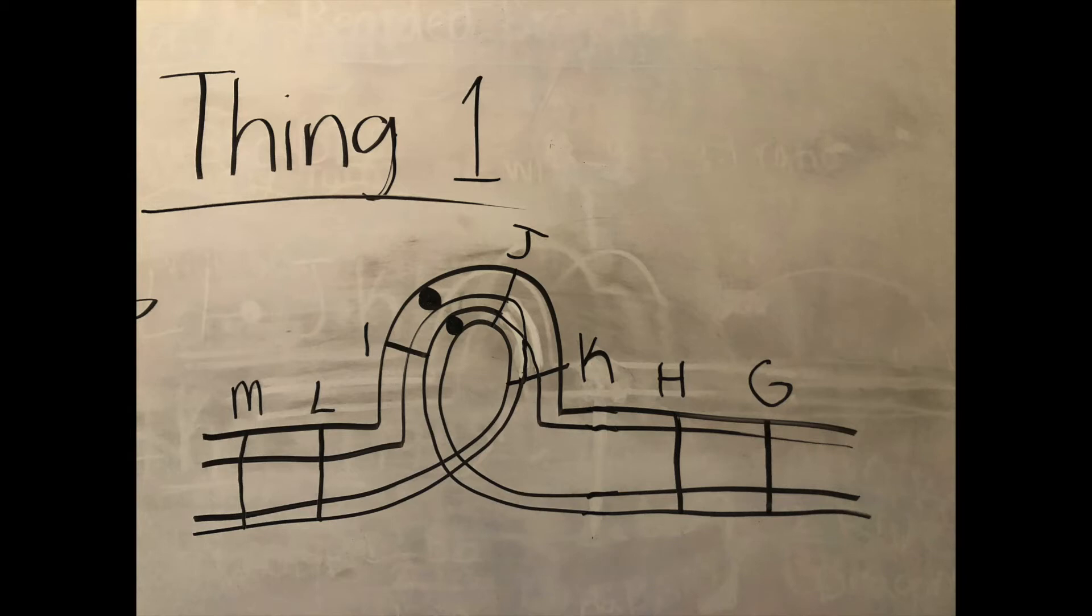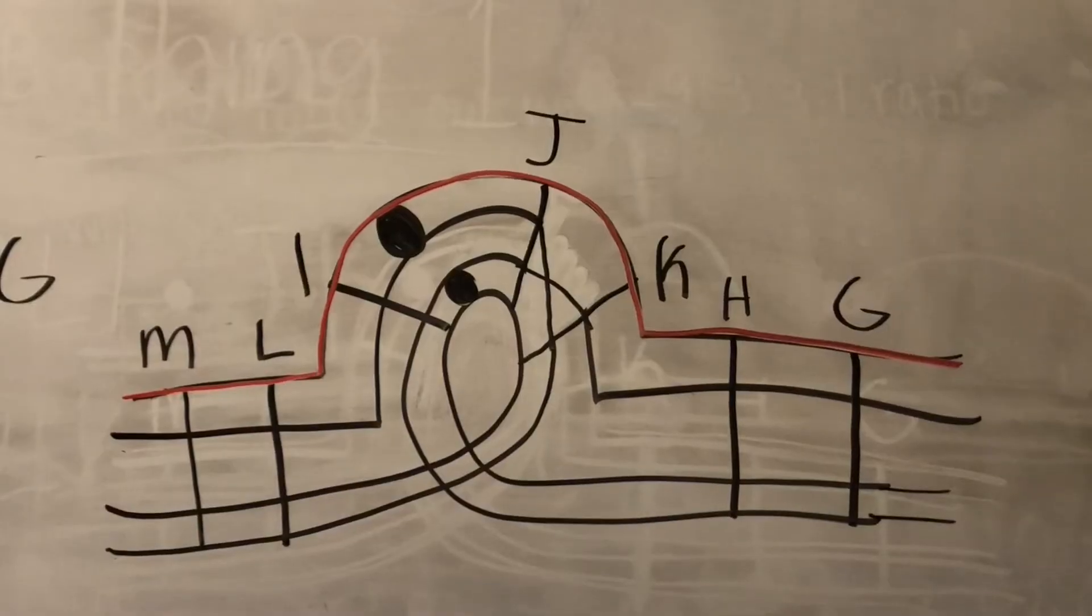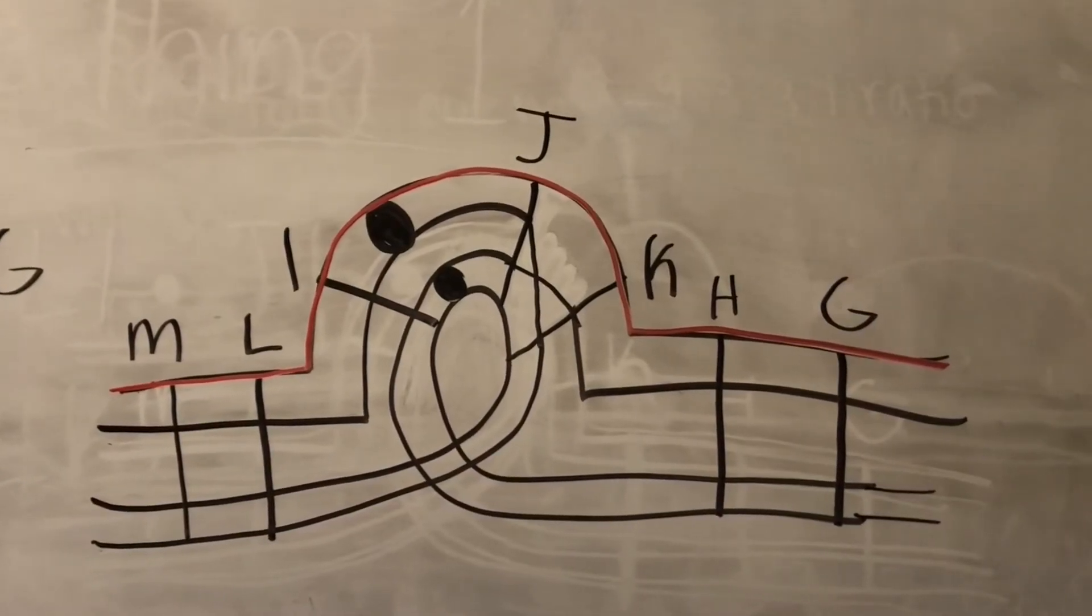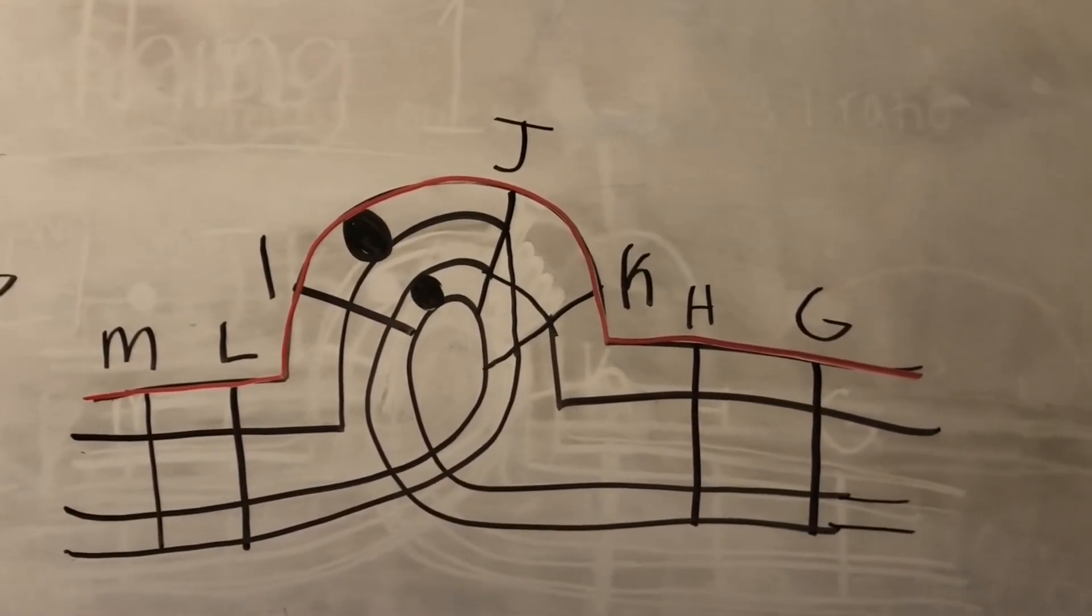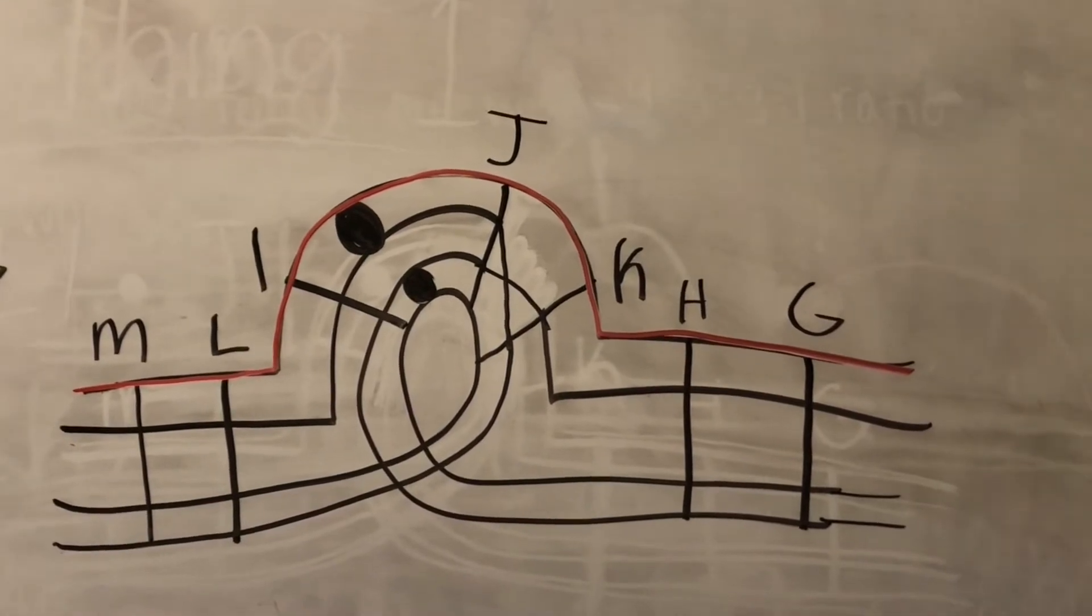Now, in order to determine which chromatids produce viable gametes, we have to check and see if we have everything we need. If we start off with the top chromatid I have highlighted in red, we will pick up M-L-I centromere J-K-H-G.